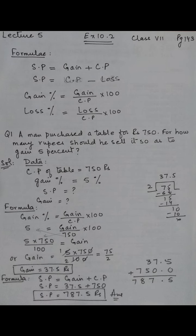These are the four formulas. SP is equal to gain plus CP. SP is equal to CP minus loss. Gain percent is equal to gain upon CP multiply by 100. Loss percent is equal to loss upon CP multiply by 100.